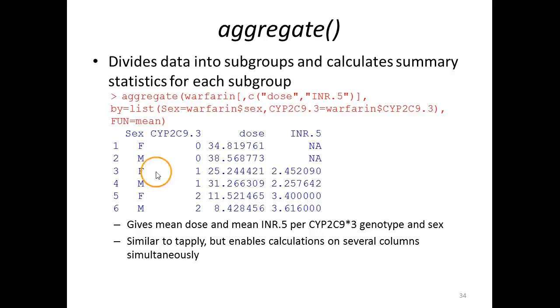We get all combinations of these: female 0, male 0, female 1, male 1, female 2, male 2. And for each subgroup here, we get the mean value of the dose and the mean value of INR dot 5. As you can see, you get NA values here, and that's either because there were no such individuals or because there were NA values within the INR dot 5 column, making the calculation of arithmetic mean return an NA value.